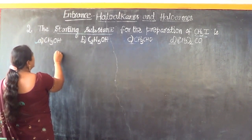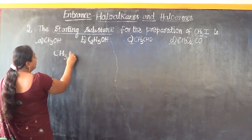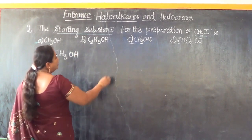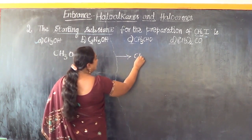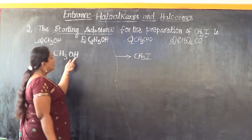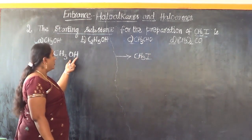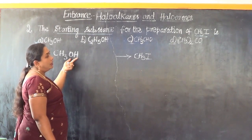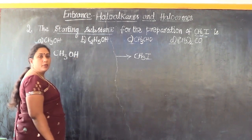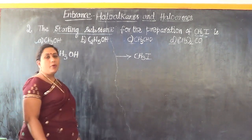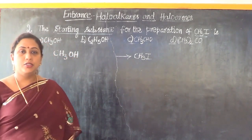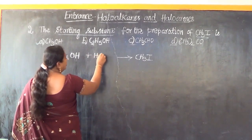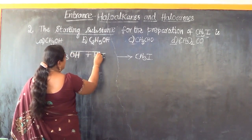Now let us write the equation for better understanding of the concept. CH3OH is to be converted into CH3I. We can subject this to a nucleophilic substitution reaction. The OH will be removed and in its place I will form the attachment. So our starting material CH3OH, upon substitution, gives the product CH3I. By nucleophilic substitution reaction we can convert methanol into iodomethane.